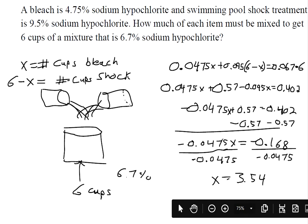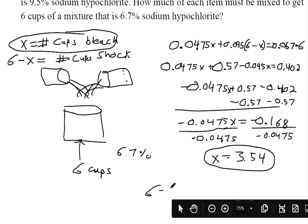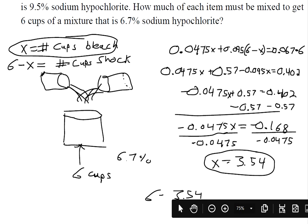That is x, the number of cups of bleach. Since there's supposed to be six cups altogether, just subtract that from six to find the amount of cups of shock treatment.